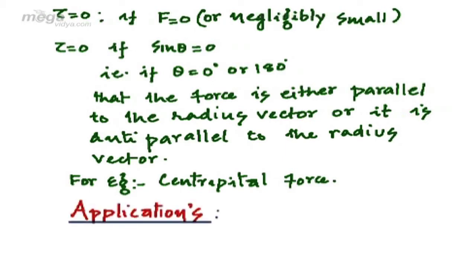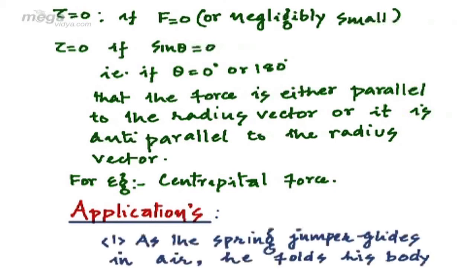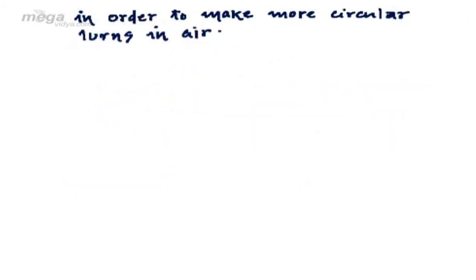We can cite numerous applications of the conservation of angular momentum in practical situations also. For example, as you may have seen, as the spring jumper glides in air, he folds his body in order to make more circular turns in air. And as he approaches nearer to water,